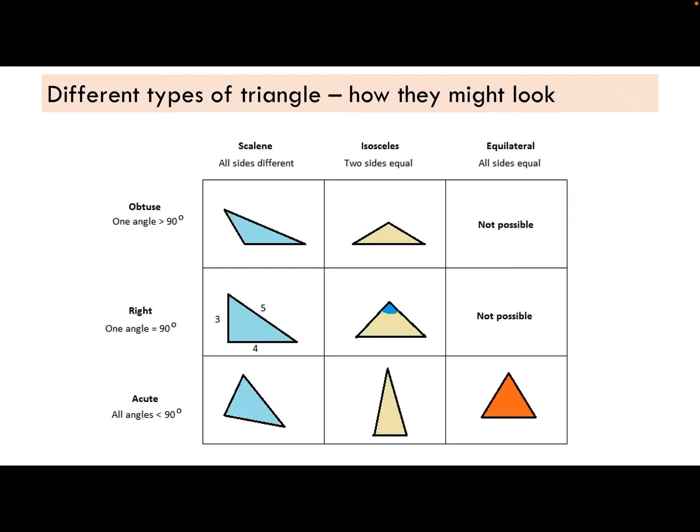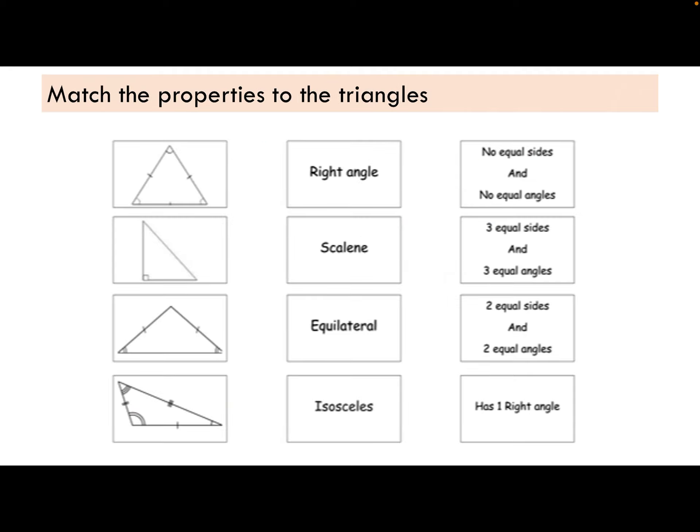Four different types of triangle. So different types of triangle, how they might look. Just have a look at this. Just go through it. I'm not going to spend too much time on that. Here we go. Match the properties of triangles. Pause the video. Just draw a line or maybe call this A, B, C, and D. Pause the video and then I'll go through the answers.